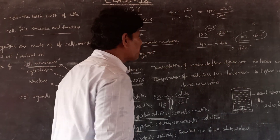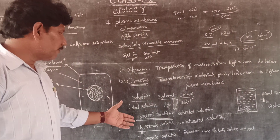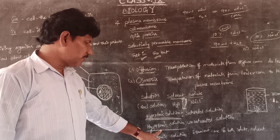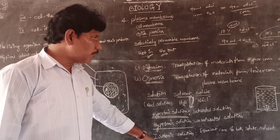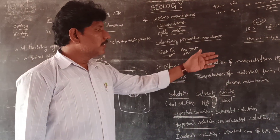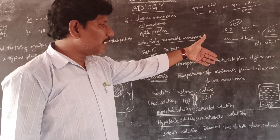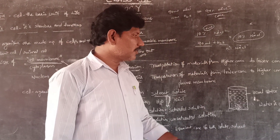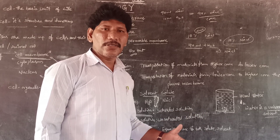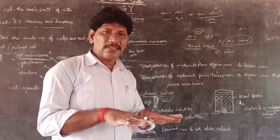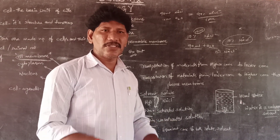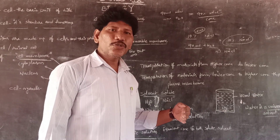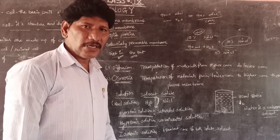A concentrated solution means 90% or 90 ml of sodium chloride. This is how we understand hypertonic and hypotonic solutions. Isotonic means equivalent concentration — for example, 50 ml of water with 50 grams of sugar or sodium chloride, where both concentrations are equal. This is called an isotonic solution.